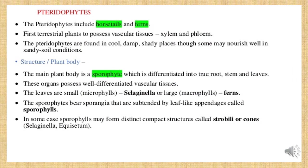Now let's come to the next category of Kingdom Plantae — pteridophytes. Pteridophytes are the first organisms that have well-differentiated roots, stem, and leaves. Examples are horsetails and ferns. These are the first terrestrial plants which have xylem and phloem — the tissues present in the plant. Xylem is used for water conduction and phloem is used for food conduction.